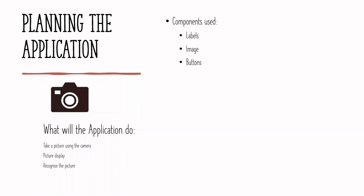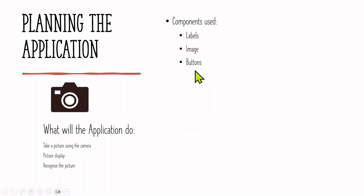So what components will we now be required to use in order to develop this app? We will need to make use of some labels. We will need to make use of an image, since we're taking a picture using our phone. That picture will be displayed in our image component. And we'll be needing some buttons which will serve as triggers.